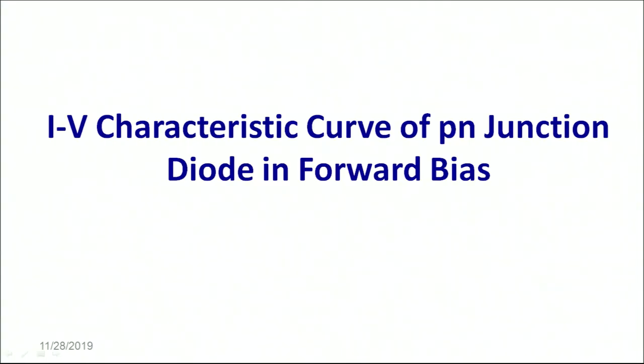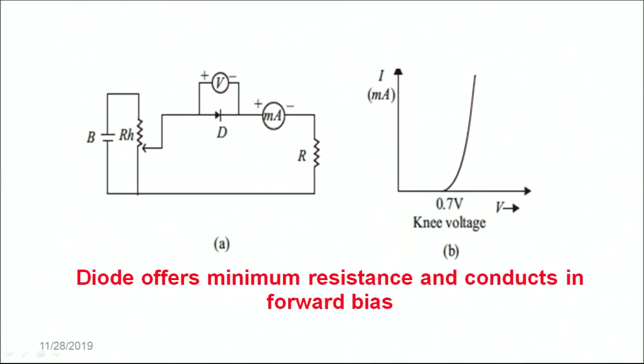Let's discuss the IV characteristic curve of a PN junction diode in forward bias. A forward bias means that the P type is connected to the positive terminal of the battery and the N type is connected to the negative terminal of the battery. This makes the diode in a forward bias. In this, the diode is connected in the forward bias by connecting the P type to the positive terminal and the N side to the negative terminal. To measure the voltage we have a voltmeter connected in parallel and an ammeter connected in series with the circuit.